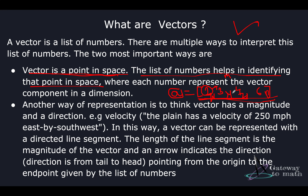There's another representation, which is what we've all studied in physics — a vector is something which has a magnitude and a direction. For instance, if I talk about velocity, a plane has a velocity of 250 miles per hour east by southwest. I'm giving the magnitude and also the direction in which the plane is moving. A vector can be represented with a directed line segment where the length is the magnitude and an arrow indicates the direction.